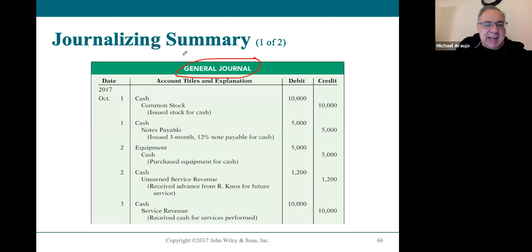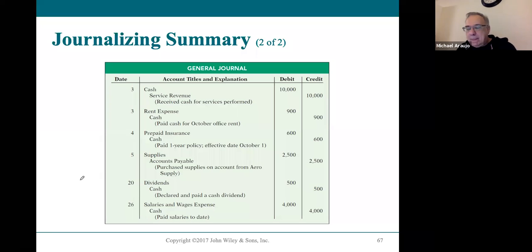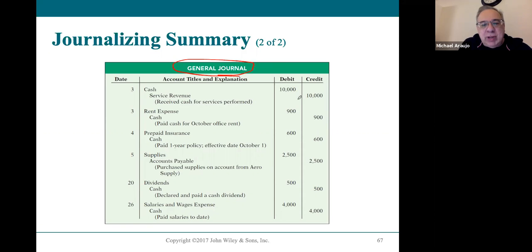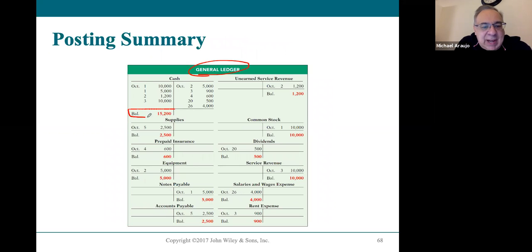These are all the journal entries for Sierra Corporation's eleven events. Once they get put into the journal, you have to transfer or post them into their accounts in the ledger. Looking at the full ledger for Sierra Corporation — after all these transactions — cash has a $15,200 balance, exactly as we calculated. We look in the ledger for the balances in the accounts, and all the accounts are listed in the order you'd see them on a balance sheet.